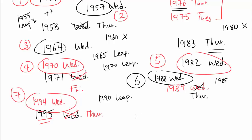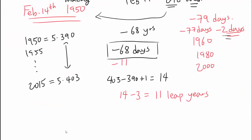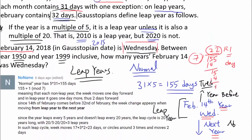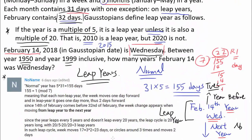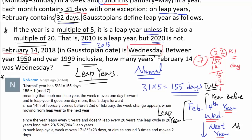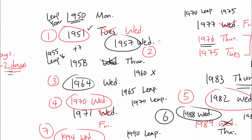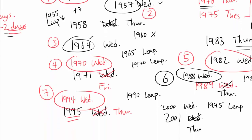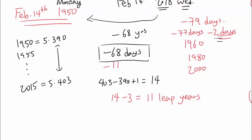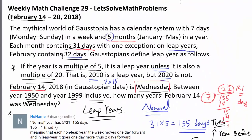Adding another 7 gets us to 2001, expecting Wednesday. But 1995 is a leap year and 2000 is not, so 2001 is Thursday, meaning 2000 is Wednesday. But we do not count 2000 because we are looking at years between 1950 and 1999 inclusive. So our final count is: 1951, 1957, 1964, 1970, 1982, 1988, and 1994 — 7 years. The answer to this question is 7.